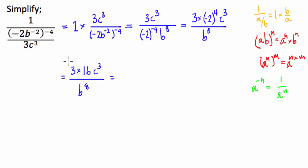And from here, all we have to do is multiply our coefficients together where we have 3 times 16 is going to be 48, c cubed over b to the power of 8. Now that is our solution here.